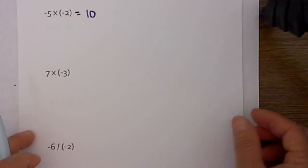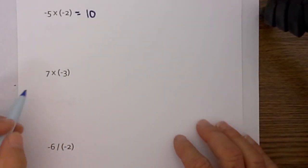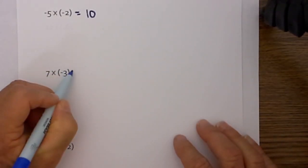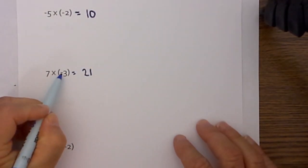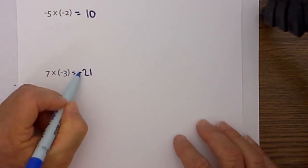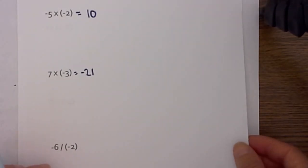Next example, I multiply like I would normally. 7 times 3 is 21. And then since one sign is negative, the answer is negative. It's as easy as that.